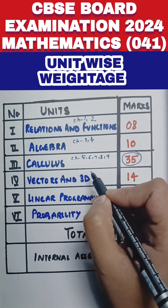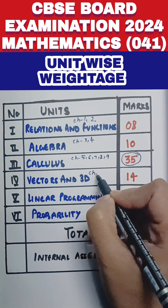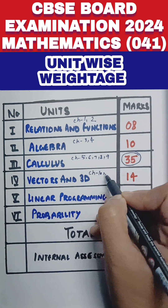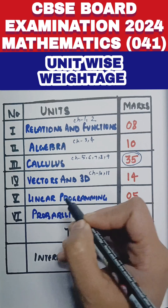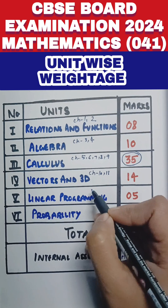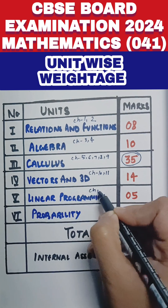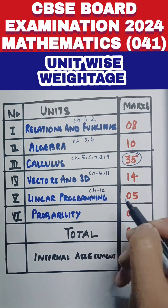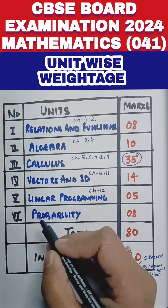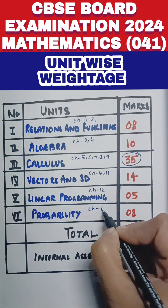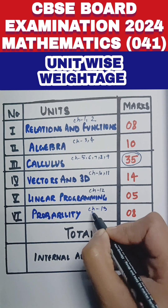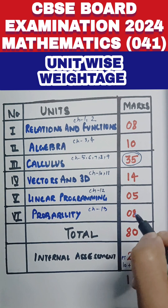Then we have Vectors and 3D — that is Chapter 10 and Chapter 11 — carrying 14 marks together. Then Linear Programming, that is Chapter 12, will carry 5 marks. And Probability is the last chapter of the syllabus — Chapter 13 — it will carry 8 marks.